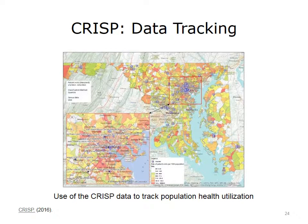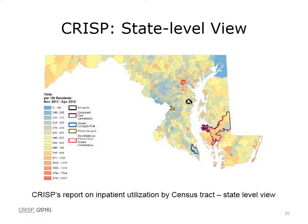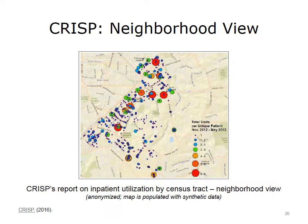This heat map illustrates the mapping of CRISP's population health risk scores across Maryland's geographical units. Patients residing in certain zip codes of the state have much higher utilization rates, which in this case is hospitalization, than other zip codes. These maps are extremely useful in planning for population health interventions on a state or regional level. This heat map illustrates the mapping of CRISP's population health risk scores across the census tracts of Maryland, using hospital visits as the marker of utilization. CRISP's utilization maps can also be drilled down into neighborhood levels, where inpatient utilization rates are depicted based on each neighborhood. Risk scores for future utilization rates will be assigned to each of these centers in the near future.